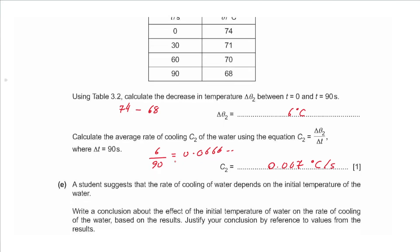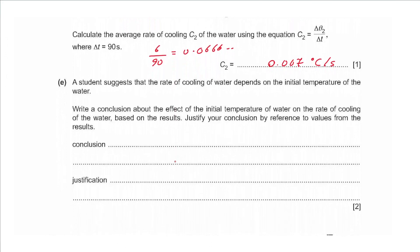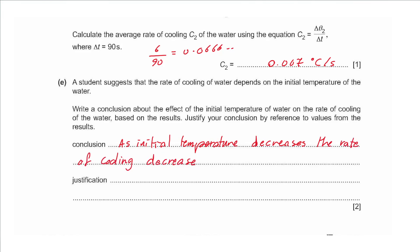Part E: a student suggests the rate of cooling depends on the initial temperature. The experiment starting at 88°C gave a higher rate of cooling, and the experiment starting at 74°C gave a lower rate. The conclusion is: as initial temperature decreases, the rate of cooling also decreases. The justification is that C1 is greater than C2.